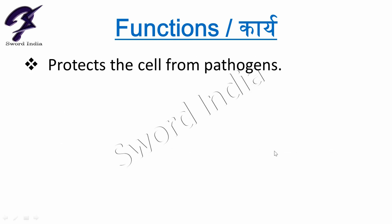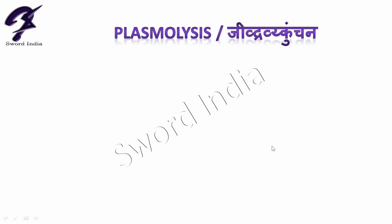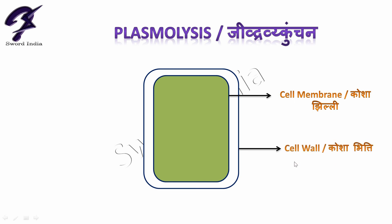It protects the cell from pathogens. Now we will discuss about plasmolysis. Suppose this is a plant cell — this inner membrane will be called the cell membrane and this outer one will be called the cell wall. In a plant cell, if this cell is subjected to a hypertonic solution —